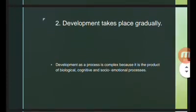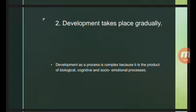The second principle is that development takes place gradually. We have to remember that development is a complex process because it is the product of three or more processes: the biological, the cognitive, the social, and emotional processes. So it is not a one-time development — it's a gradual process.